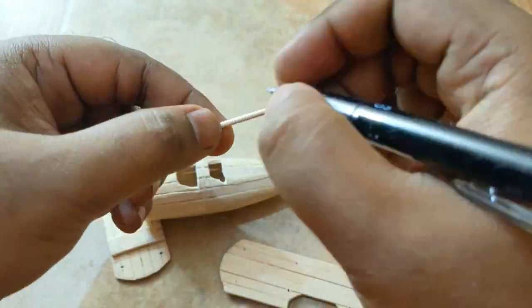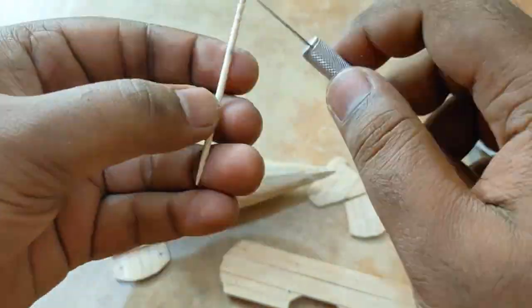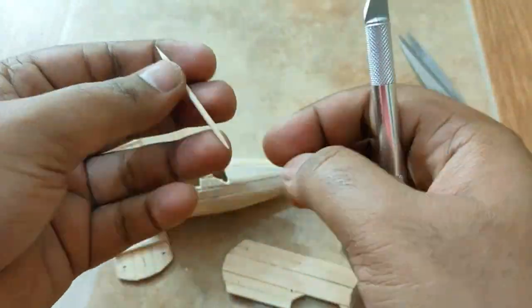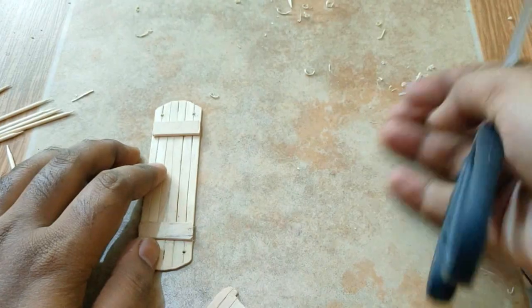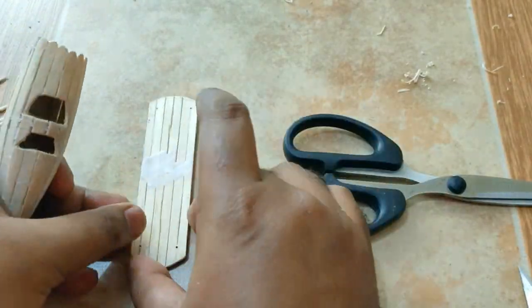I am using toothpick here for the poles. I am measuring the pole length and cut it out with exact size. You need to measure it very well, otherwise it will not fit properly and it will be unbalanced.